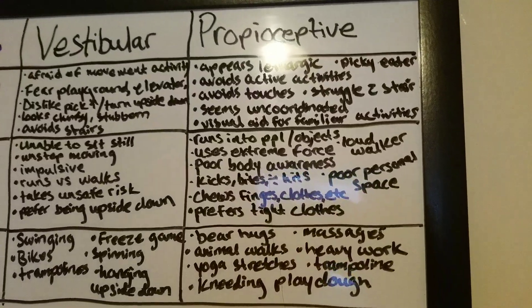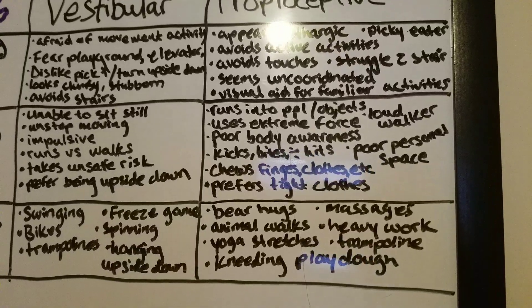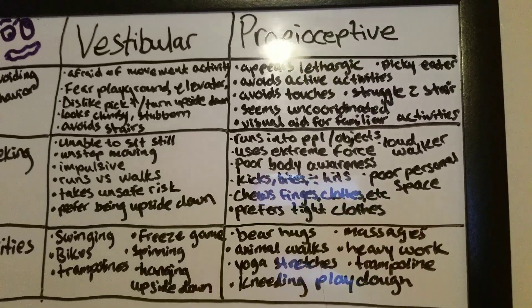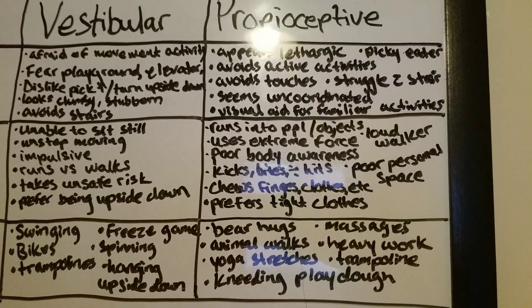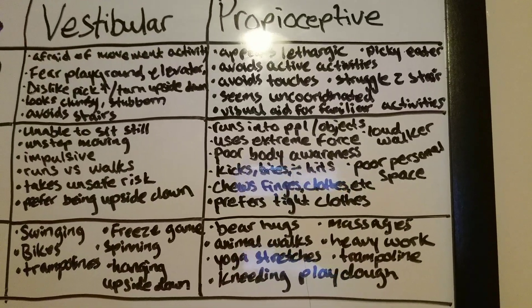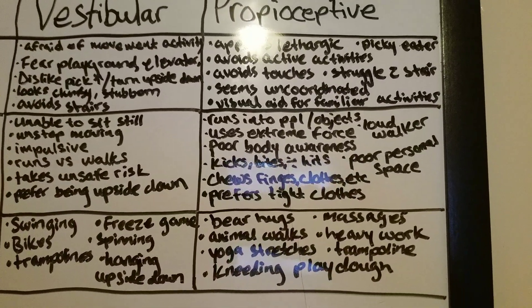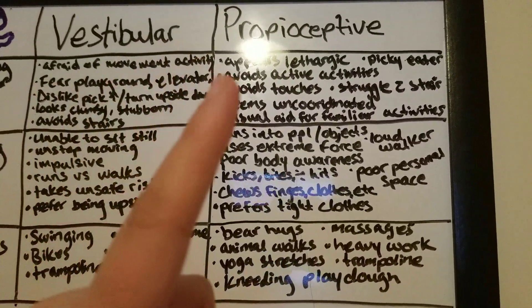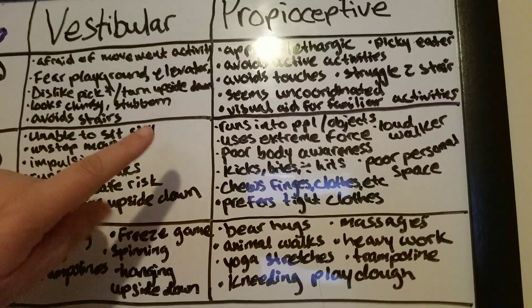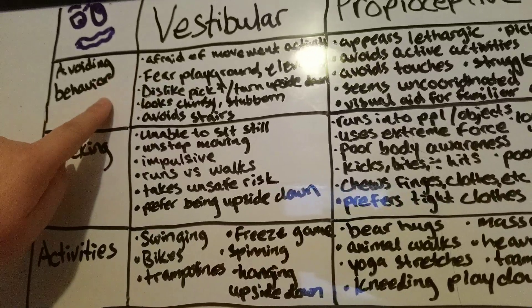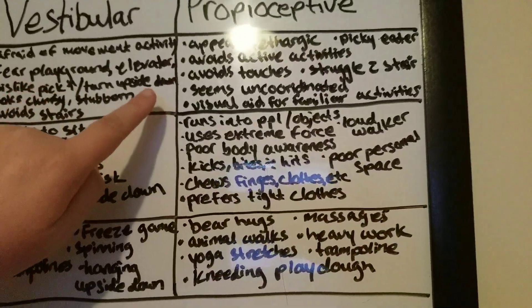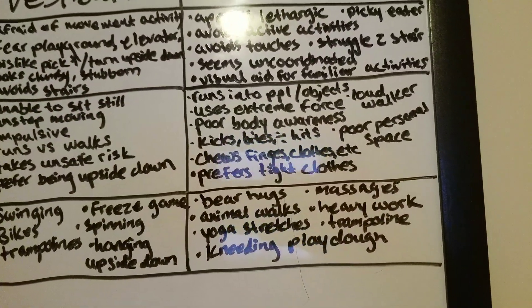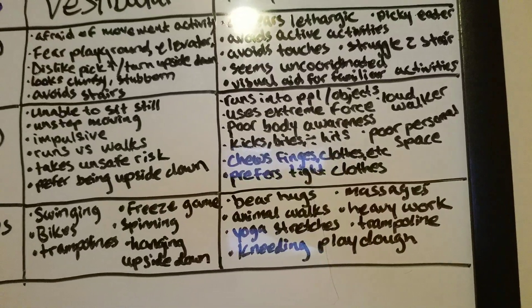So, a child that is avoiding proprioceptive input may appear to be lazy or lethargic. They could be considered a picky eater. They will avoid activities that are very active, like you've noticed in the vestibular. They also struggle with stairs.